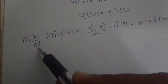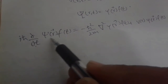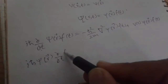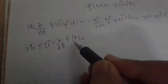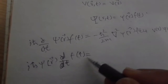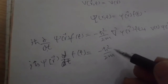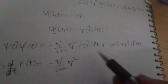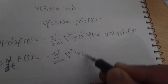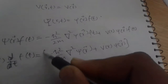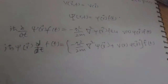On the left-hand side, since we apply the time derivative, ψ(r) is treated as a constant and f(t) as the variable. So we write iℏ·ψ(r)·d/dt f(t), using ordinary derivative instead of partial derivative since only one variable (time) appears. On the right-hand side, since the Hamiltonian and potential are independent of time, f(t) in both terms acts as a constant, and we separate ψ(r)·f(t). Dividing both sides by ψ(r)f(t):